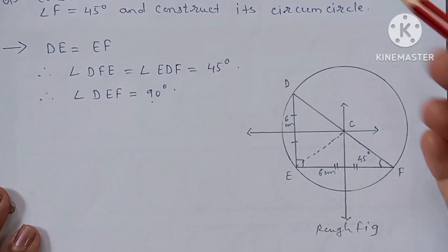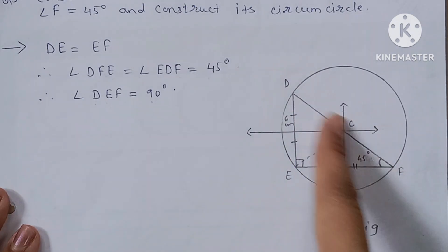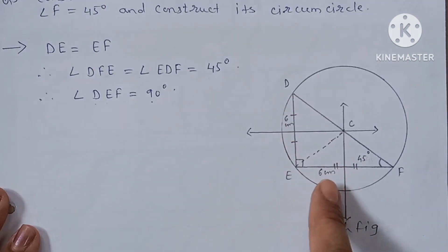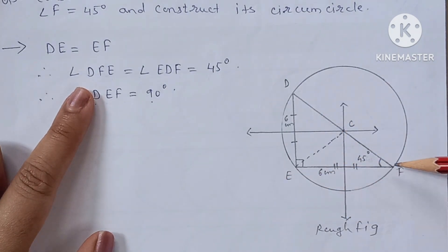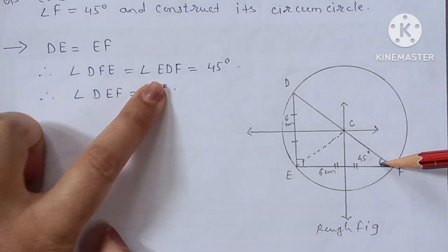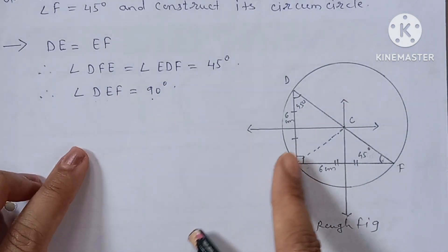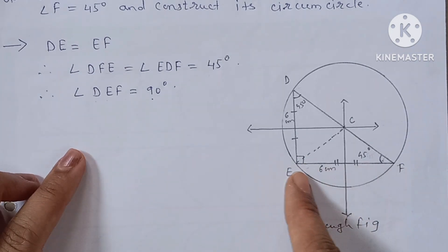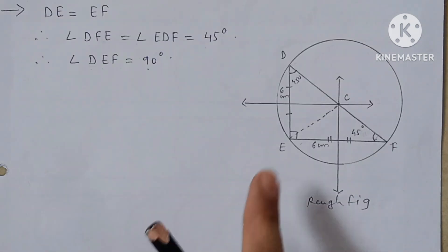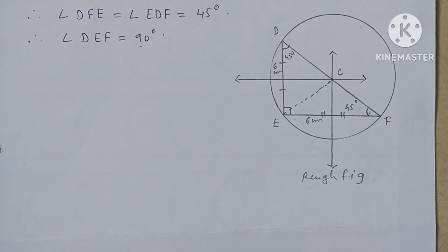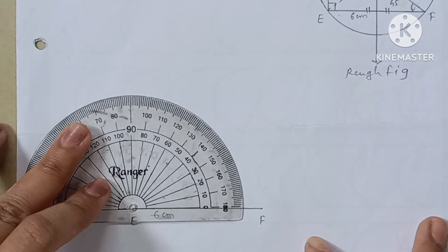EF equals 6 centimeters and DE equals 6 centimeters are given. Angle F is 45 degrees. Since the two sides are equal, angle DFE is already 45 degrees and angle EDF is also 45 degrees, while angle E is 90 degrees. For the fair figure, first draw the base EF equal to 6 centimeters. Now mark angle E as 90 degrees.